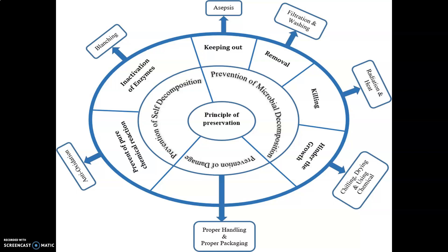Self-decomposition can be prevented by destruction or inactivation of food enzymes. Inactivation of enzymes can be achieved through blanching. The primary purpose of blanching is to destroy enzyme activity in fruits or vegetables. Blanching is not a standalone method of preservation but is used as a pre-treatment prior to freezing, drying, or canning. It can also be used for softening vegetable tissues to facilitate filling into containers, or for removing air from intracellular spaces prior to canning.